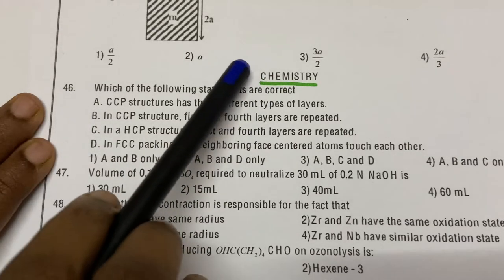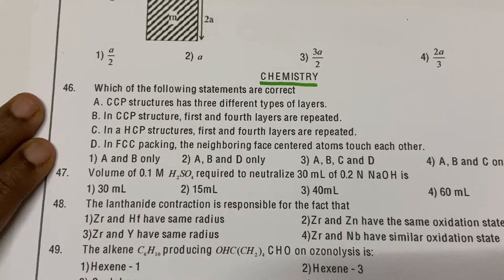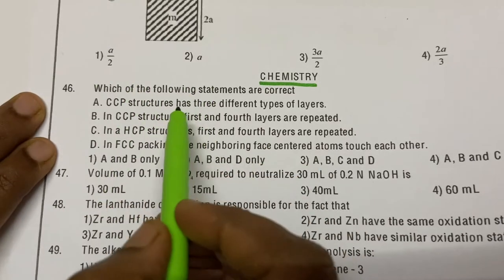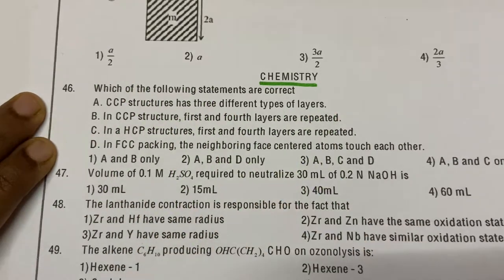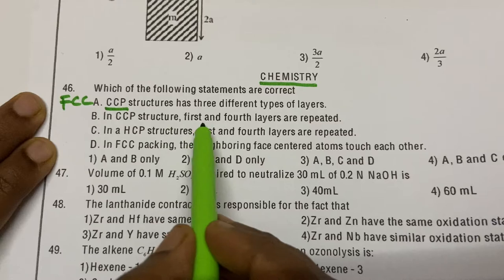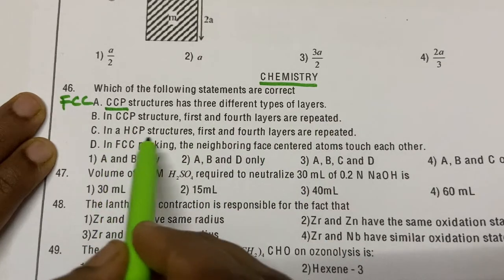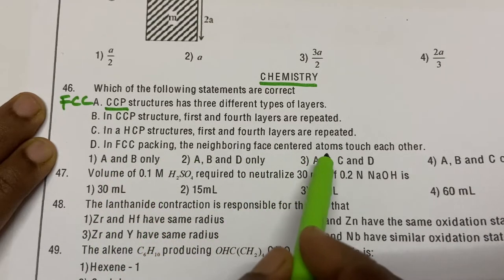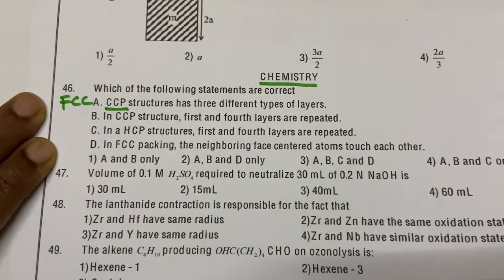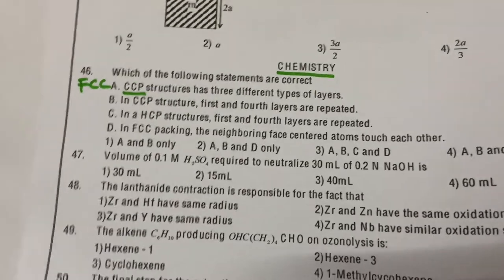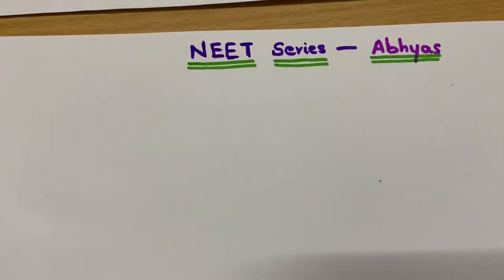First question. Chemistry questions start here. Which of the following statements are correct? Statement A: CCP structure has three different layers. What is CCP? CCP is another name for FCC — both are same. Statement B: In CCP structure, first and fourth layers are repeated. Statement C: In HCP structure, first and fourth layers are repeated. Statement D: In FCC packing, neighboring face-centered atoms touch each other. We have to find which statements are correct — more than one may be correct. Let me explain what CCP is.